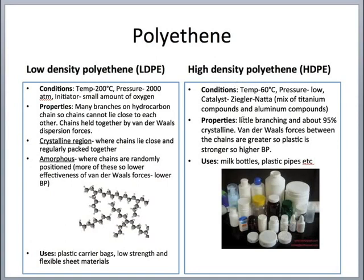In high-density polyethene there is little branching, and about 95% is crystalline, meaning the chains are arranged close together and can pack quite closely. This increases the van der Waals forces between chains, making HDPE stronger with a higher boiling point than LDPE. The uses also differ: LDPE is used for plastic carrier bags and low-strength flexible sheet materials, whereas HDPE is used for milk bottles and plastic pipes because it is considerably stronger.